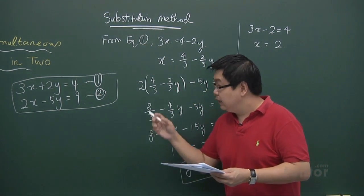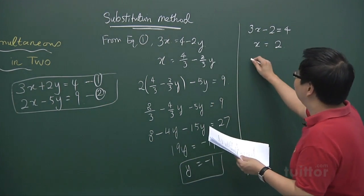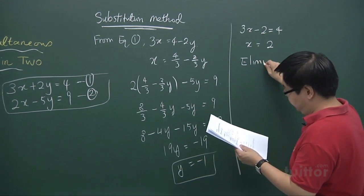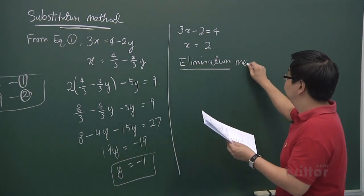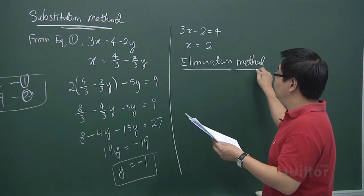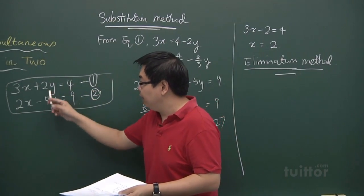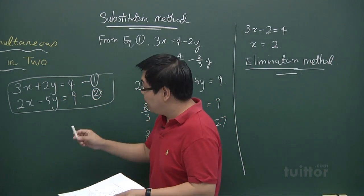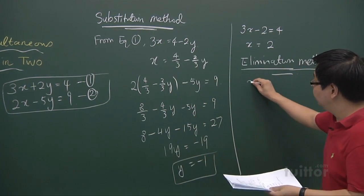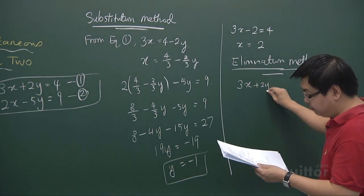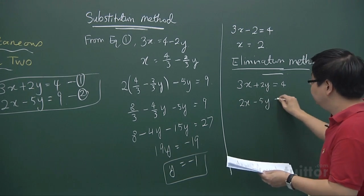Now let me show you another approach towards solving this equation, using the elimination method. Elimination method is to actually try to get rid of one of the unknowns by adding or subtracting the two equations. So looking at the given equations: 3x plus 2y equals to 4, and 2x minus 5y equals 9.